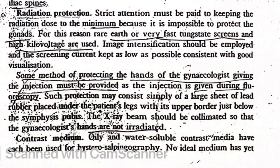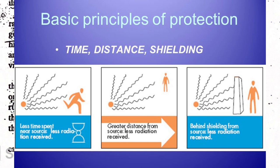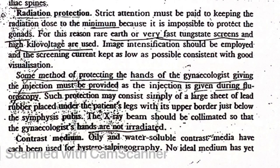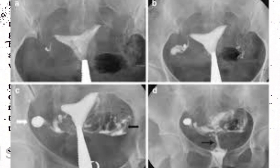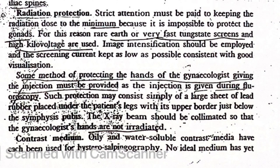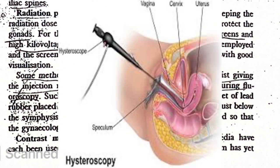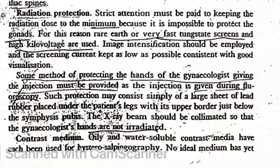Radiation protection: strict attention must be paid to keeping the radiation dose to the minimum, because it is impossible to protect the gonads. For this reason, rare earth or very fast tungstate screens and high kVp are used. Image intensification should be employed and the screening current kept as low as possible consistent with good visualization. Some method of protecting the hand of the gynaecologist giving the injection must be provided. Such protection may consist simply of a large sheet of lead rubber placed under the patient's legs, with its upper border just below the symphysis pubis. The X-ray beam should be collimated so that the gynaecologist's hands are not irradiated.